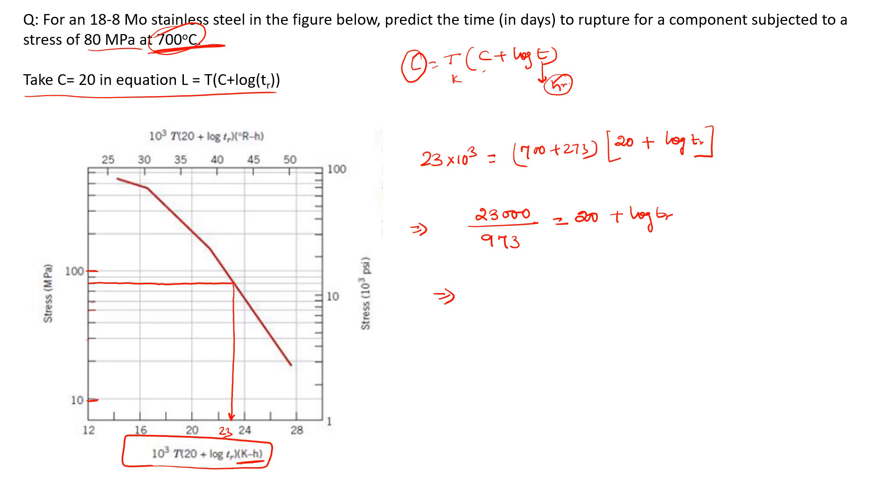Using the calculator, 23,000 divided by 973 equals 23.638. So log t_R equals 23.638 minus 20, which equals 3.638. Therefore, t_R equals 10 to the power 3.638.